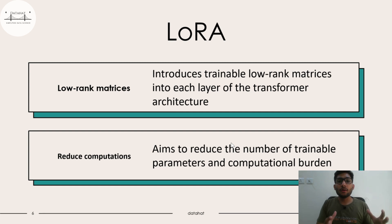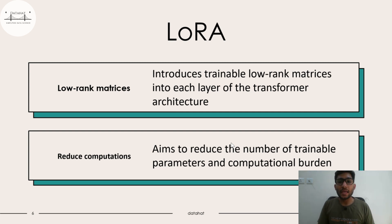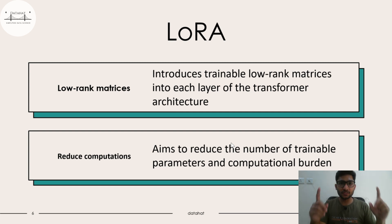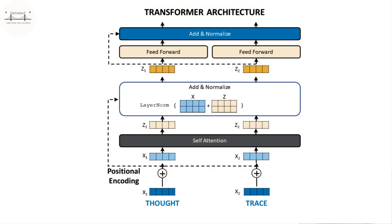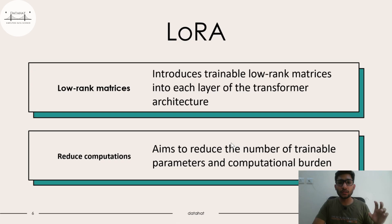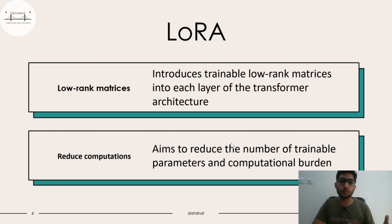What does LoRA basically mean? LoRA is low-rank approximation. What it does is it introduces low-rank matrices into each layer of the transformer architecture. I'll attach the transformer architecture diagram here — let me know if you want a separate video on it. LoRA introduces low-rank matrices into the transformer architecture, thereby aiming to reduce the number of trainable parameters and computational burden incurred in fine-tuning these models.